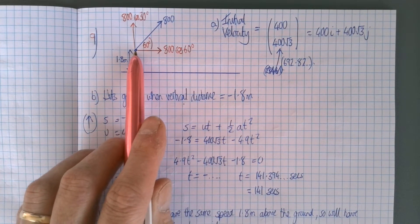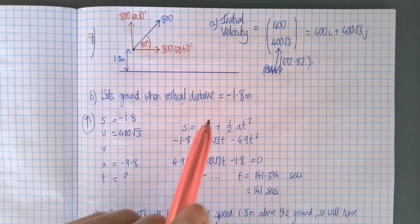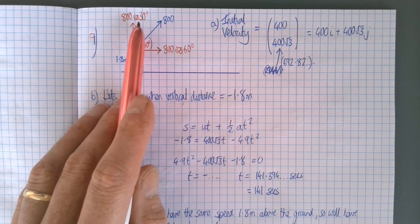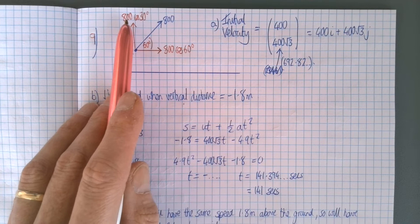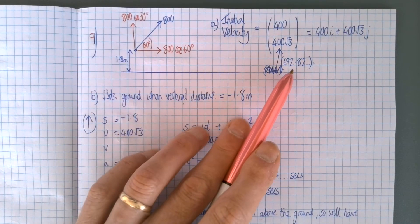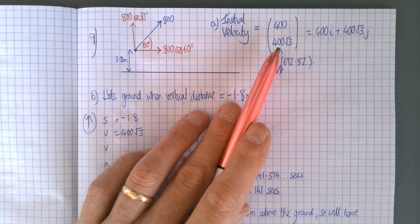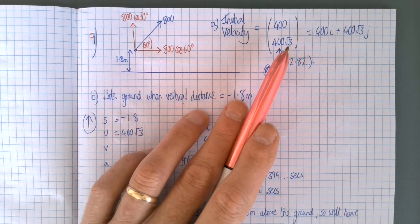Interestingly, cos of 60 is a half, so that gave me 400 root 3. I knew it was going to be a nice round value, couldn't remember what it was. When I typed in 800 cos 30 I got a horrible decimal number. Now actually cos 30 is root 3 over 2, so this is the exact value of that, so I left it as 400 root 3.